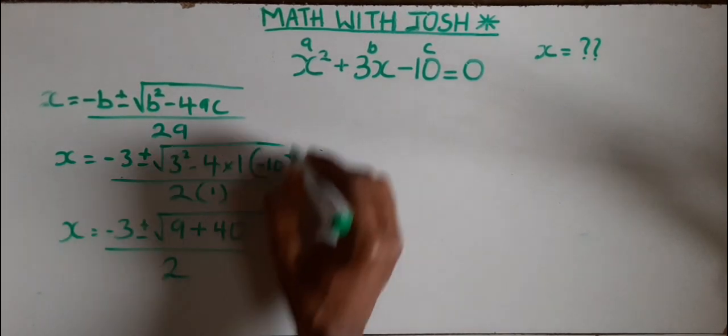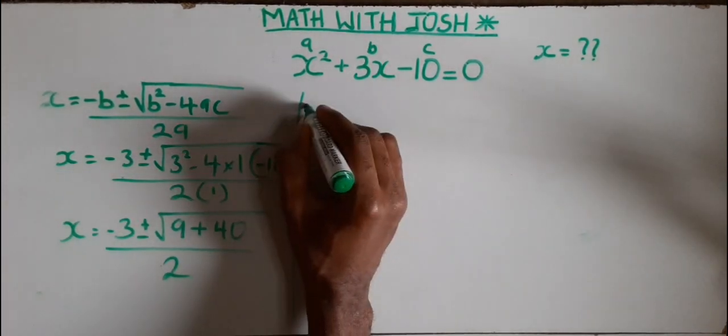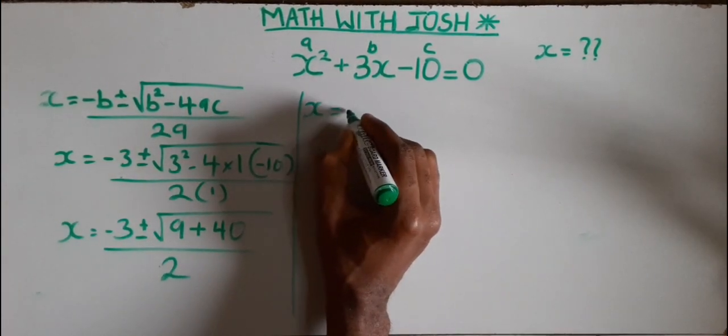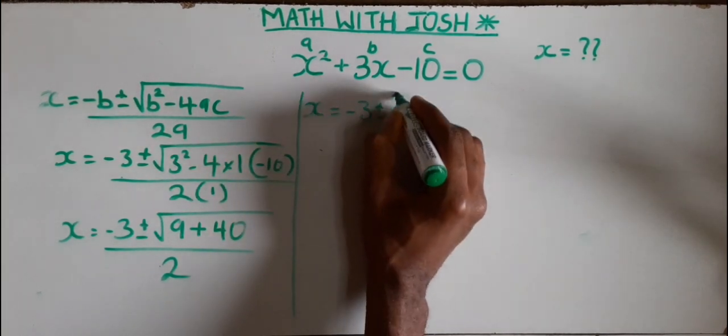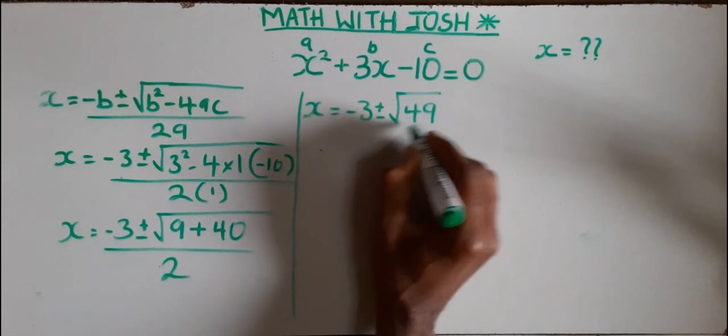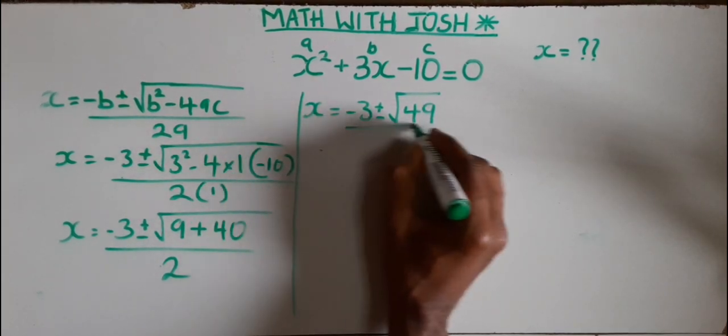Now moving further, x equals minus 3 plus and minus, 9 plus 40 we have 49, all over 2.